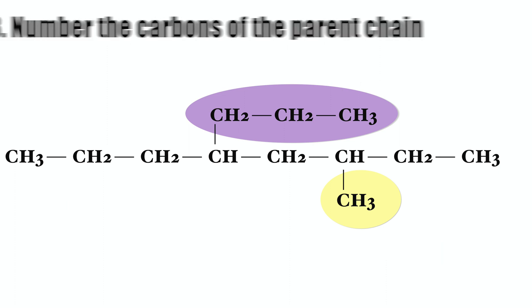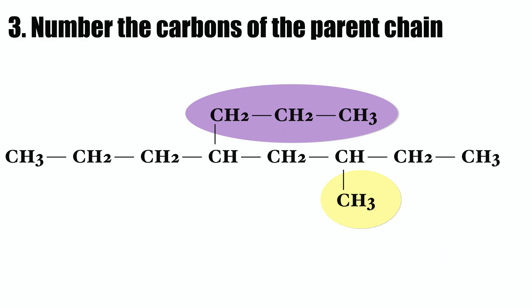Rule number three: number the carbons of the parent chain starting from the end that is closest to a substituent group. In this case, the substituents are attached to third and the fifth carbons.